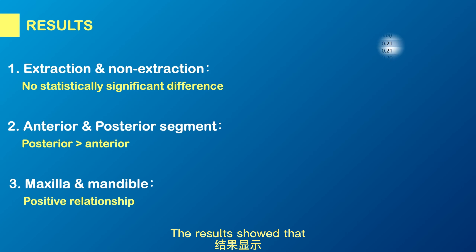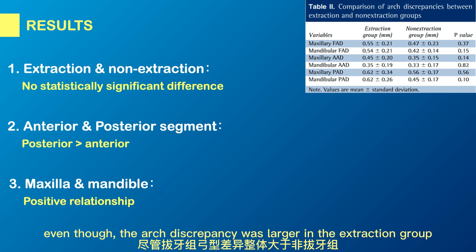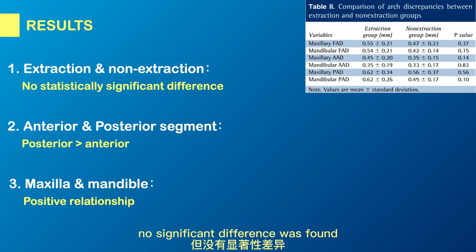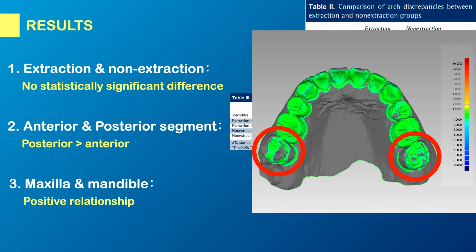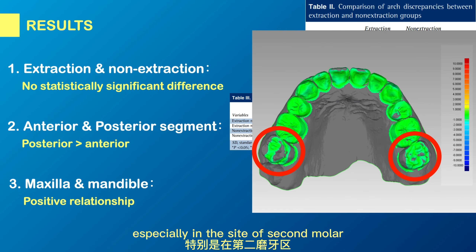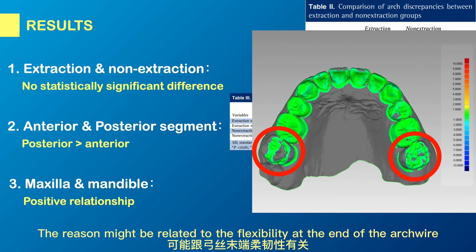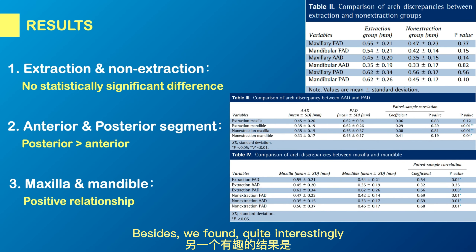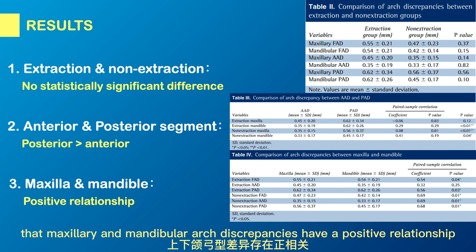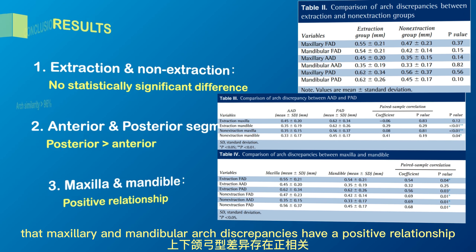The results showed that even though the arch discrepancy was larger in the extraction group, no significant difference was found. Arch discrepancy of the posterior segment was larger than the anterior segment, especially in the area of the second molar. The reason might be related to the flexibility at the end of the arch wire. Besides, we found quite interestingly that maxillary and mandibular arch discrepancies have a positive relationship.